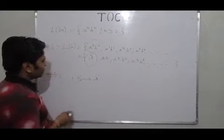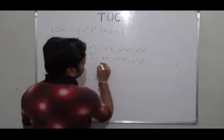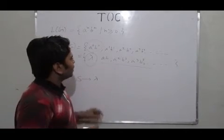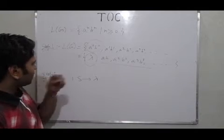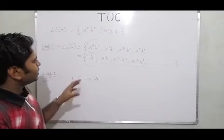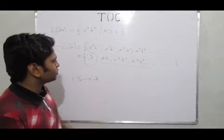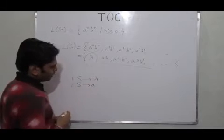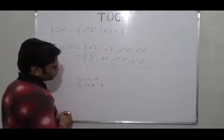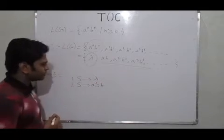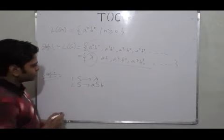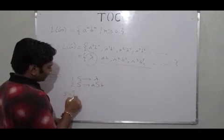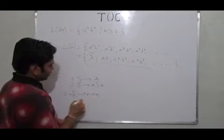We define the first production as lambda. Now we can move successively to find a production that can generate this language. We can see that a and b have equal power, meaning they change in an equal fashion. So we make a recursive call: we want to generate a, also generate b, and also make the recursive call. In this fashion, lambda would be obtained as the first string.